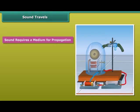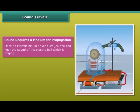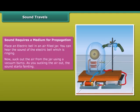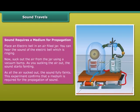Sound requires a medium for propagation. Place an electric bell in an air-filled jar. You can hear the sound of the electric bell ringing. Now suck out the air from the jar using the vacuum pump. As you suck the air out, the sound starts fainting. As all the air is sucked out, the sound fully faints. This experiment confirms that a medium is required for the propagation of sound.